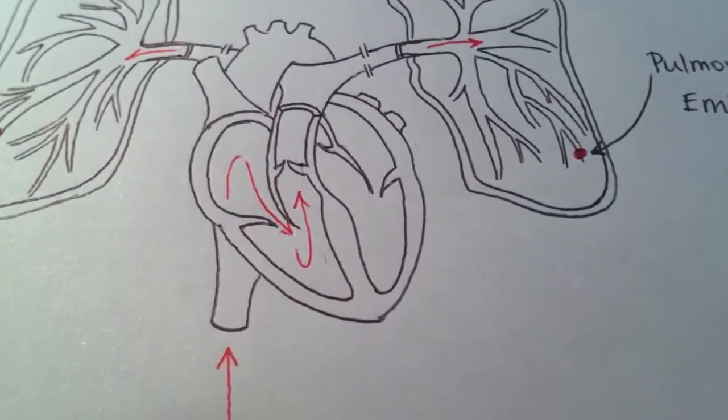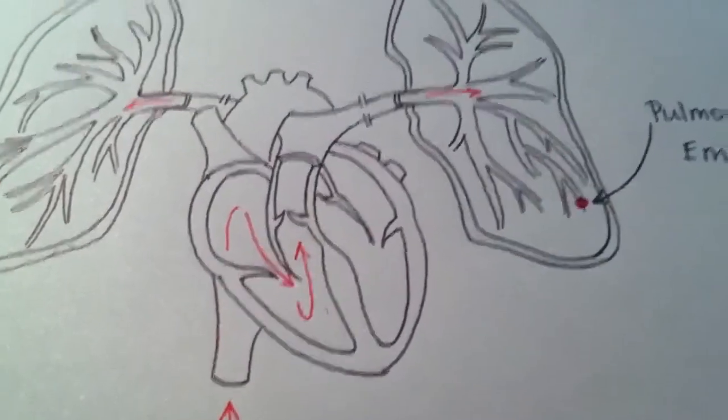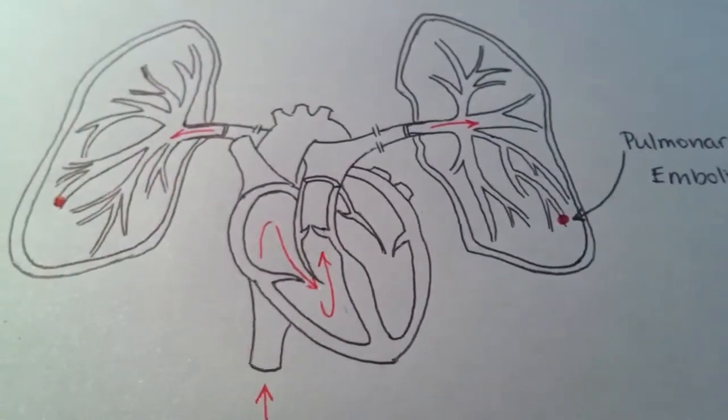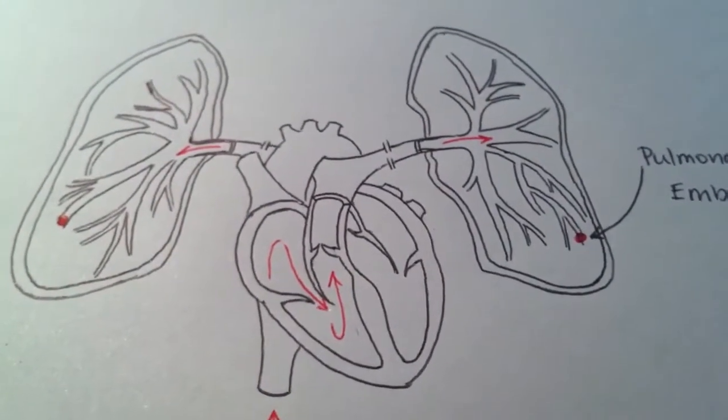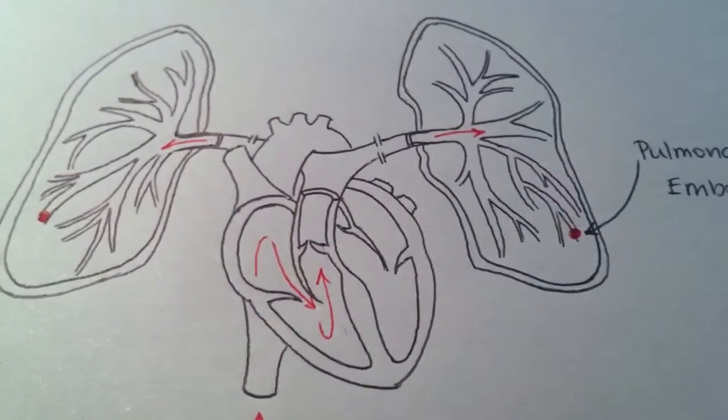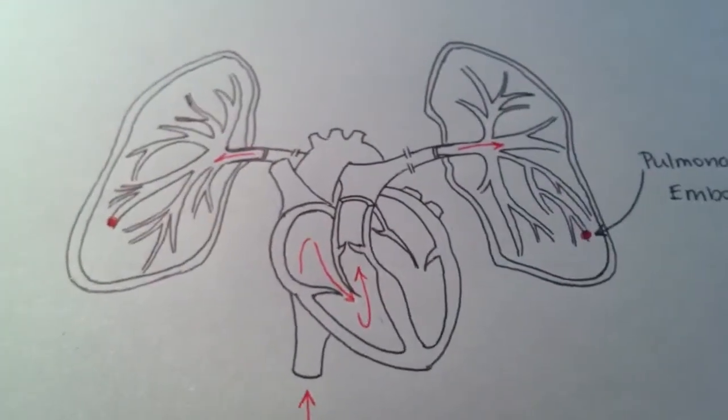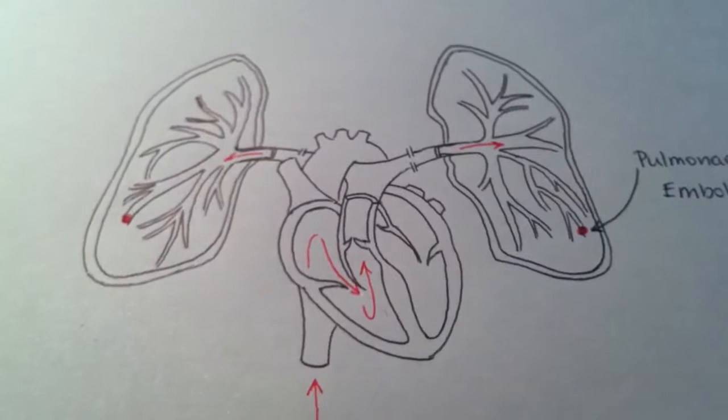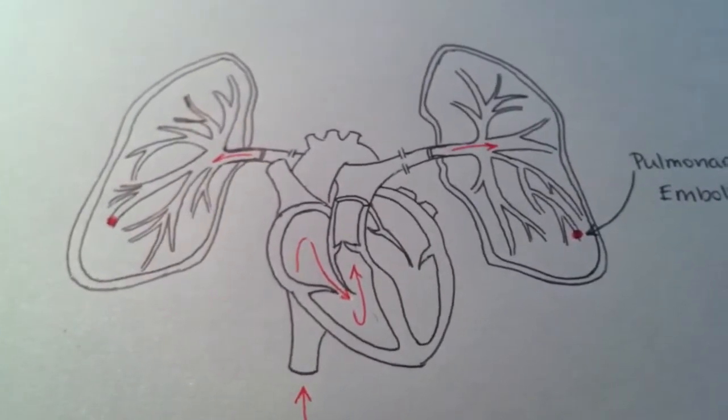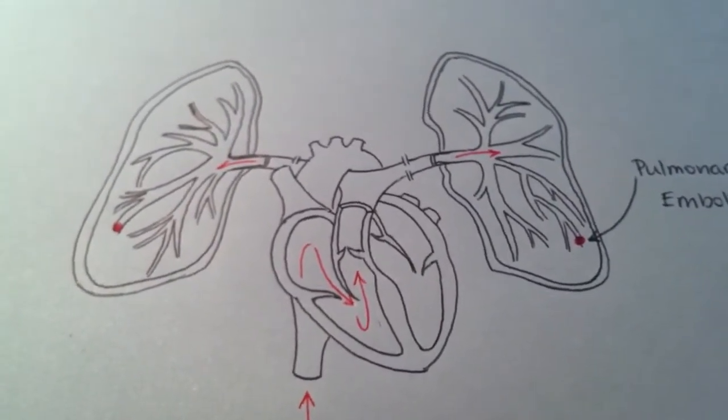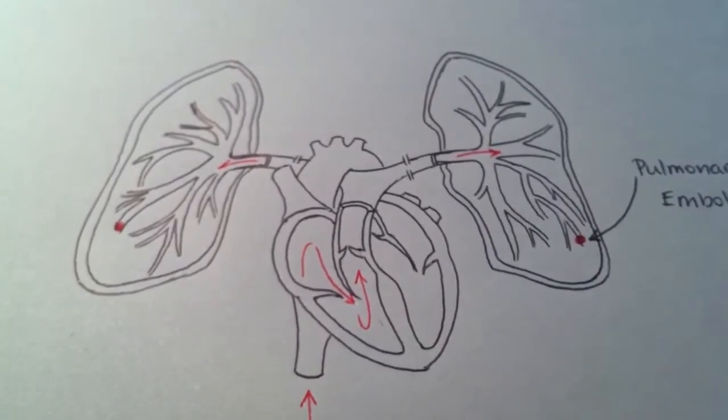And it goes up into the pulmonary circulation and goes to the lungs. The lungs then distribute down into these tiny blood vessels, and the clot is too big to get through those tiny vessels so it gets stuck there.